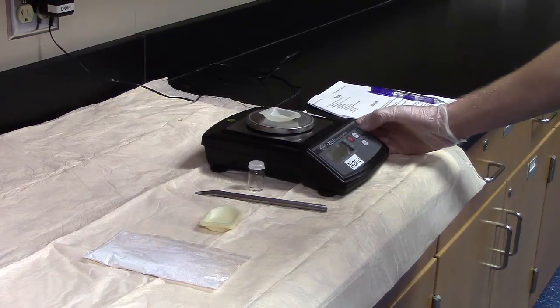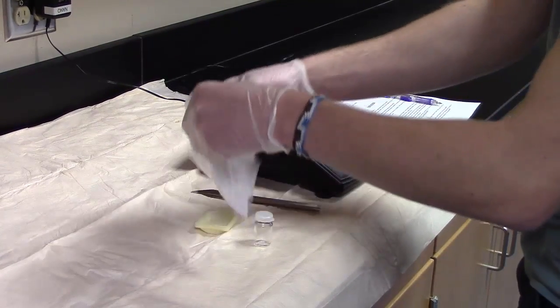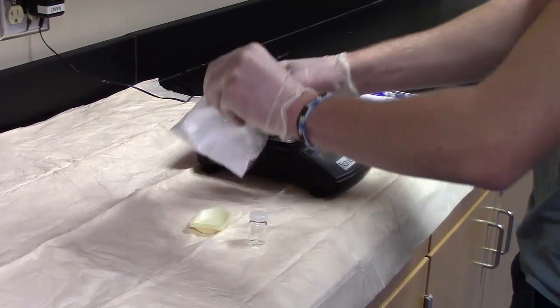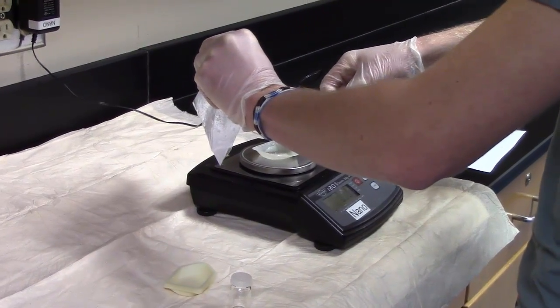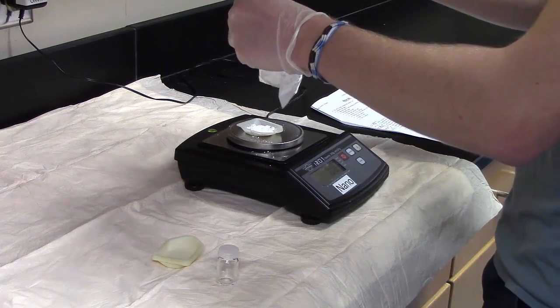Next, place a weighing bolt on the balance and tare the balance so that it reads zero. Open the sealed snack bag and use the scoop or spatula to place about 0.99 gram to 1.01 grams of the glow germ powder into the weighing bolt. Re-seal the snack bag.